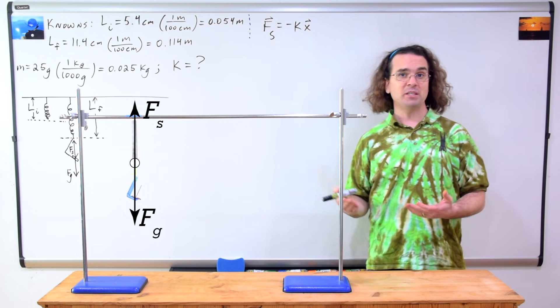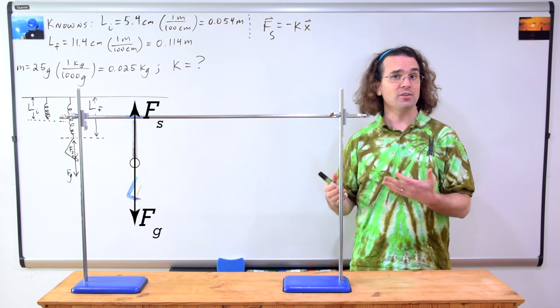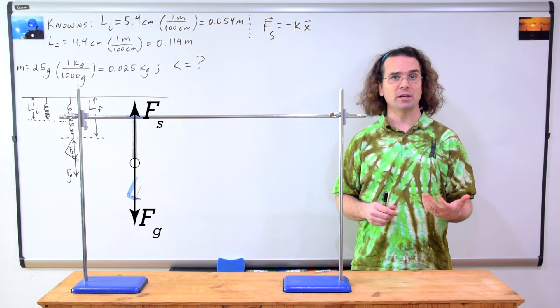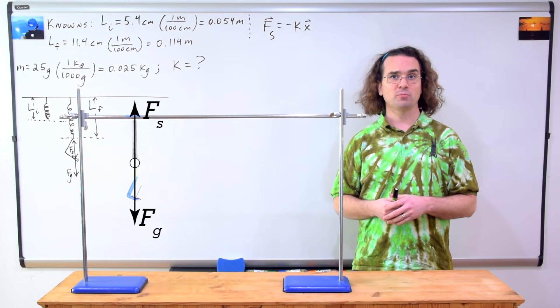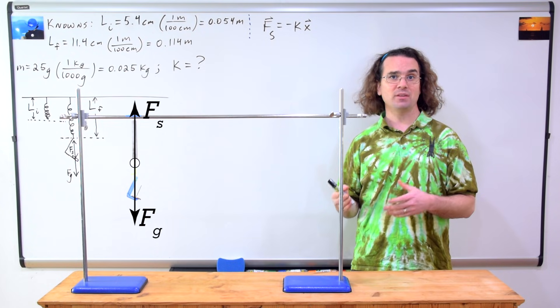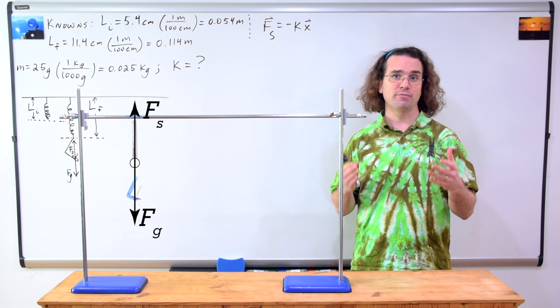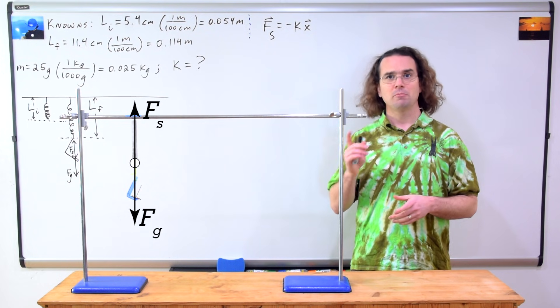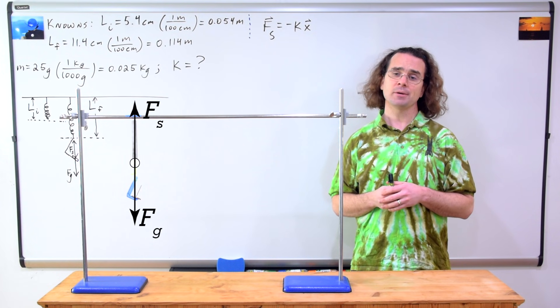Correct, the displacement of the spring is down. And according to the negative in the spring force equation, the direction of the force of the spring is opposite the direction of the displacement of the spring. So the spring force is up. Bobby, please continue solving the problem.